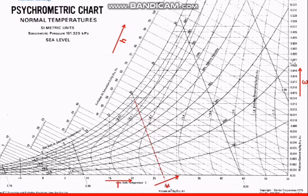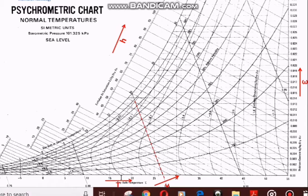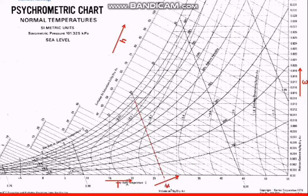This is an example of a psychometric chart. Looking at the x-axis, you can see the dry bulb temperature in degrees Celsius, starting from negative 5, 0, 5, 10, 15, 20, 25. The dry bulb temperature lines go up to a specific line on the chart.